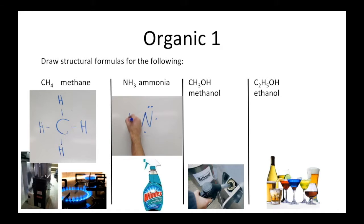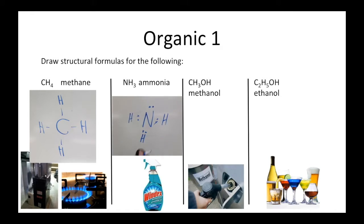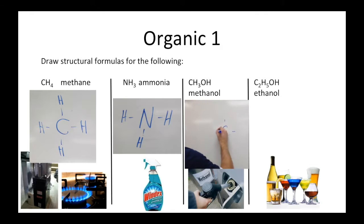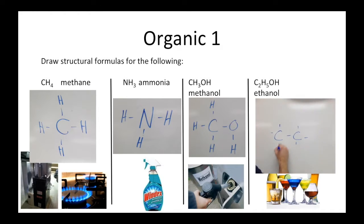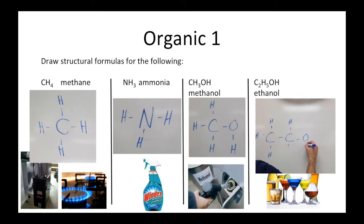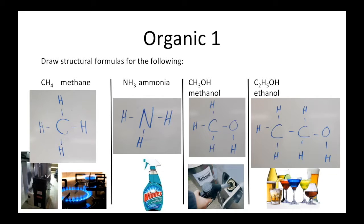Nitrogen has the most bonding electrons so it goes in the middle, with hydrogens around it. We erase the dots, put in dashes, and we get the structural diagram for ammonia. Methanol has carbon in the middle with four dashes — CH3 then O connected to H. Ethanol has two C's together surrounded by five H's: C2H5, then O connected to H, giving us C2H5OH. So we've gone from Lewis dot diagrams to structural diagrams.